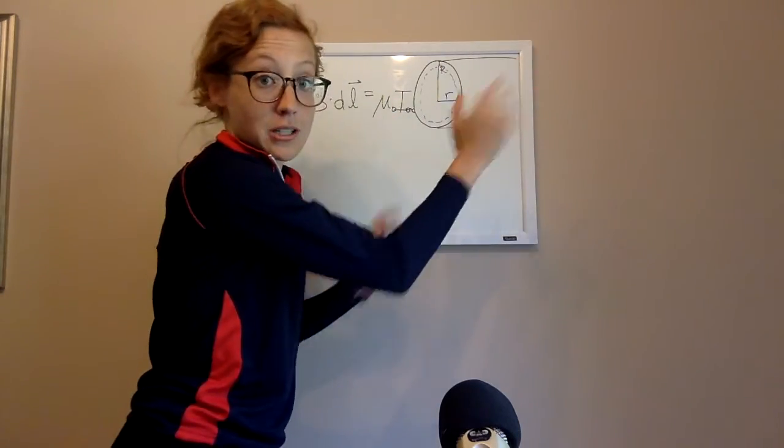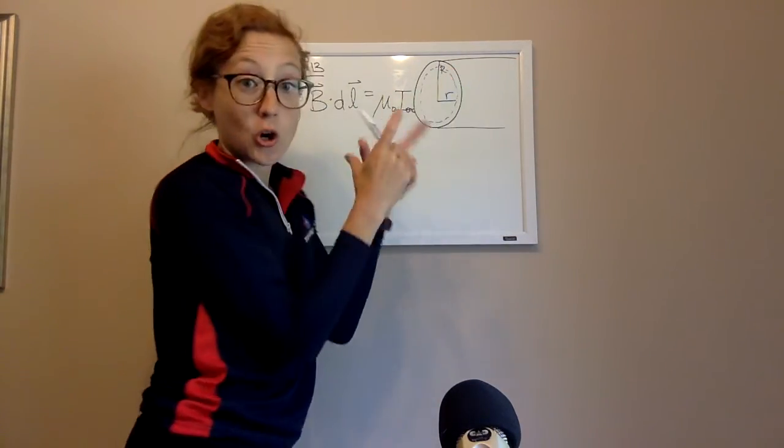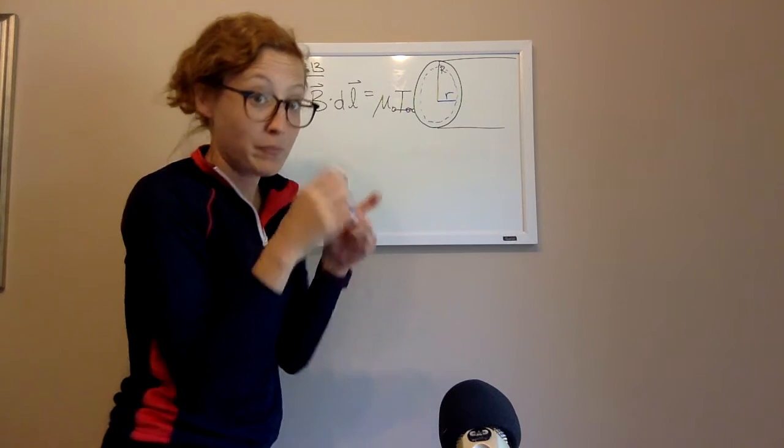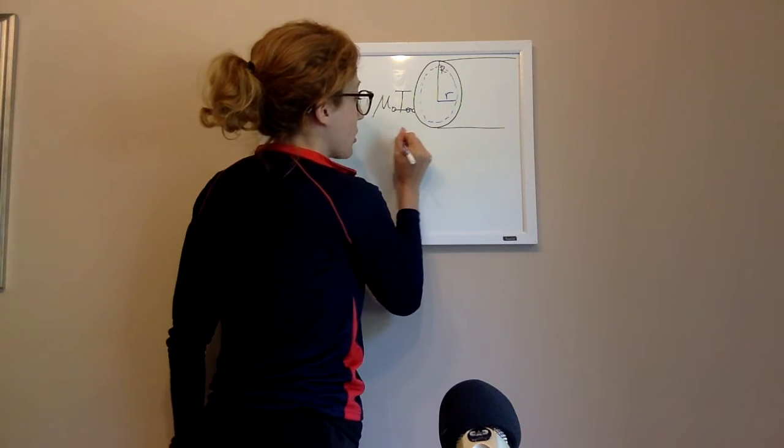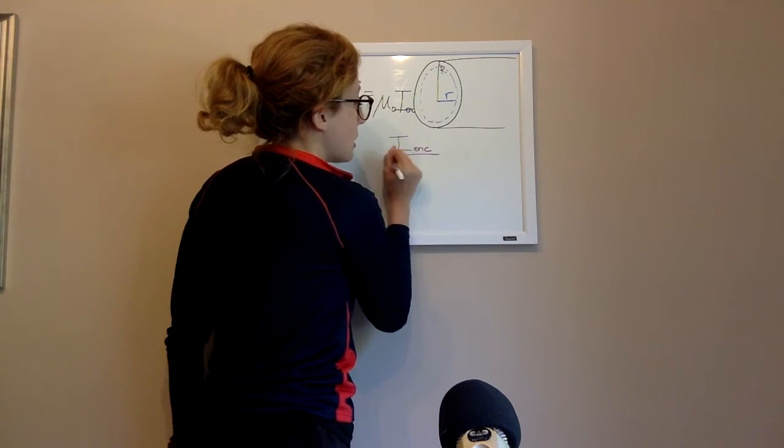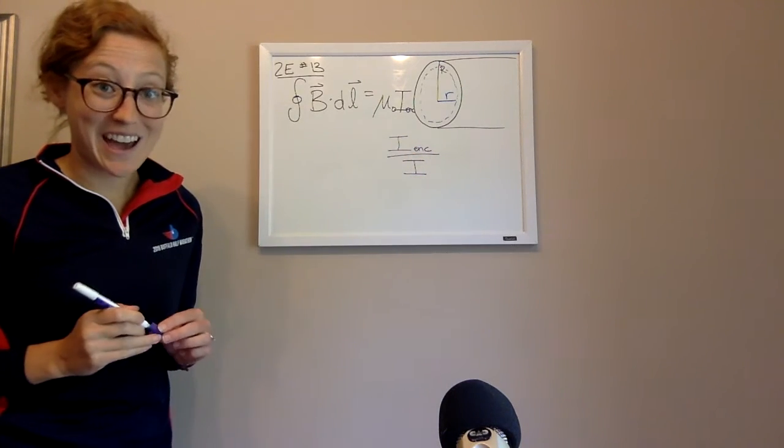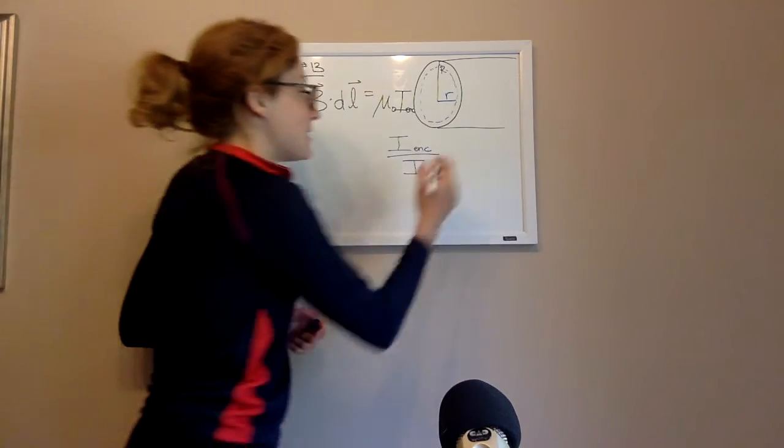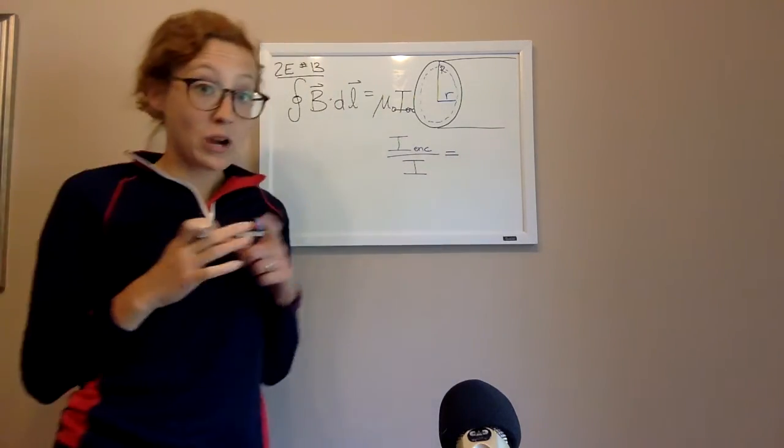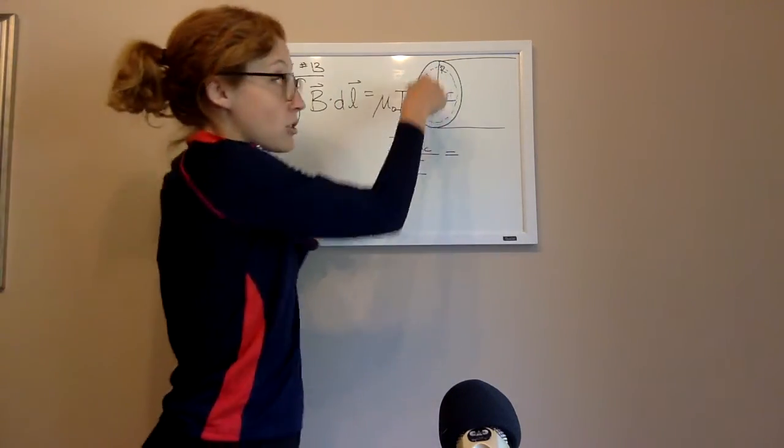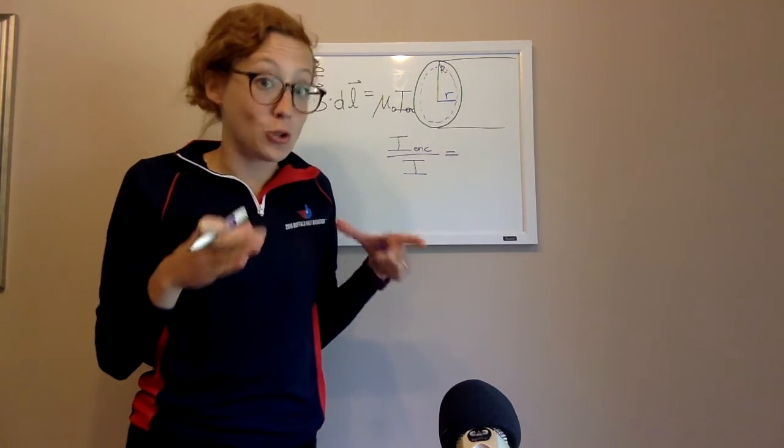What I know is I. I know the total current. What I don't know is the current just enclosed by that blue circle. But what I can say for sure is that I enclosed over the total current I is going to be the same as the ratio of that smaller inner circle to that total circle.